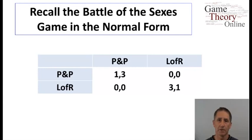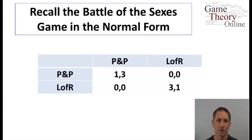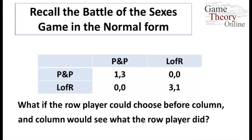We have two spouses wishing to go together to a movie, but having opposite preferences. One prefers to go to Pride and Prejudice, and the other, Lord of the Rings, and here are the payoffs written. But now what happens if one of them gets to make their choice first, announces, and only then the second player gets to make their choice?